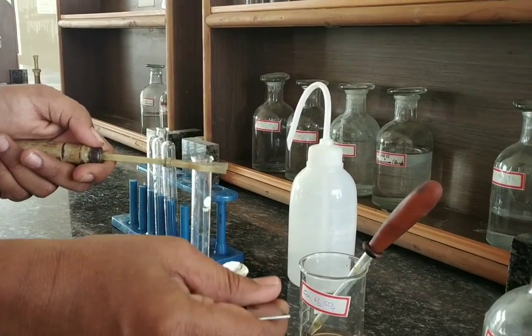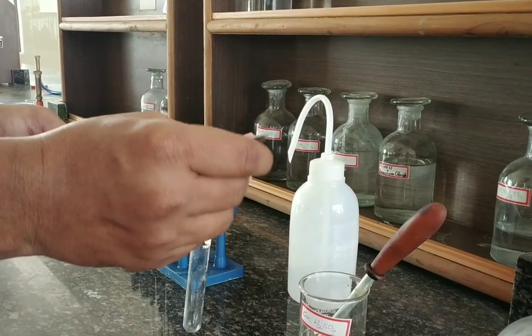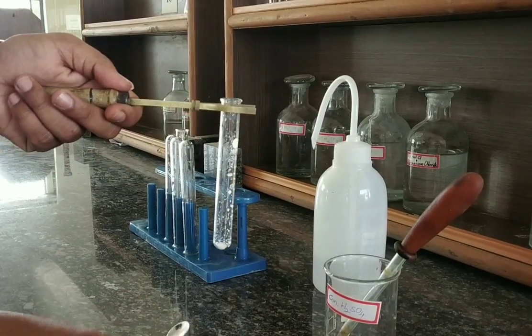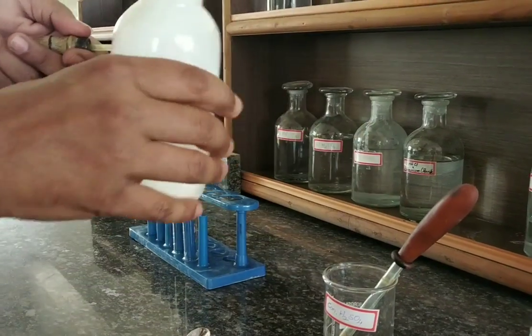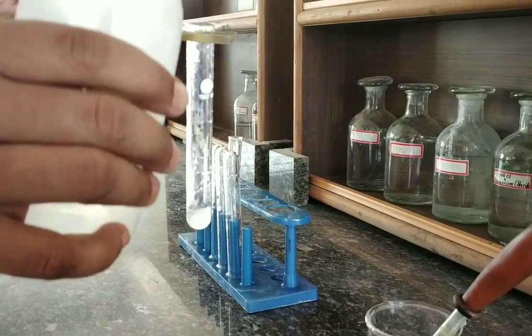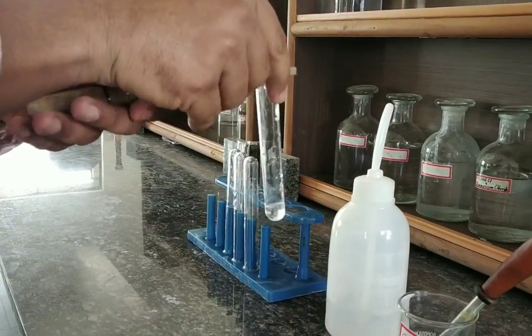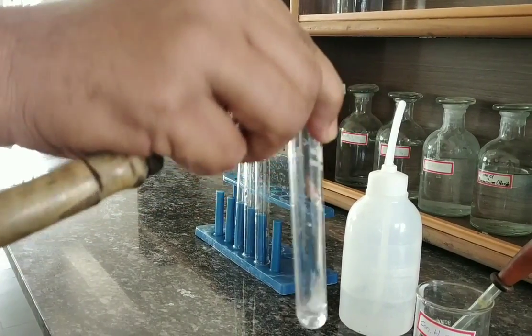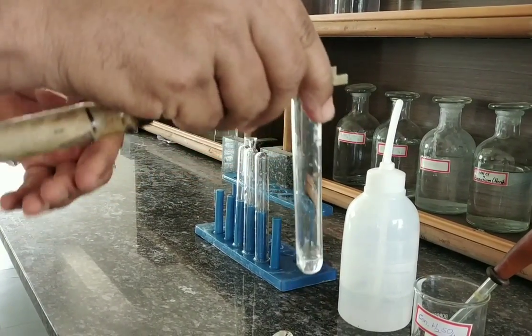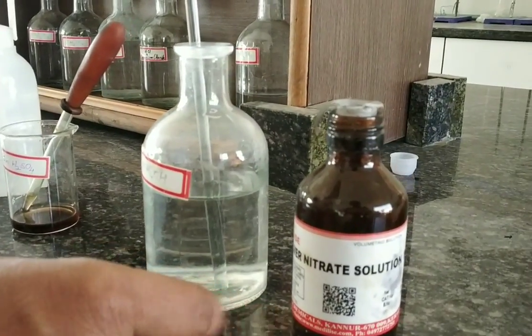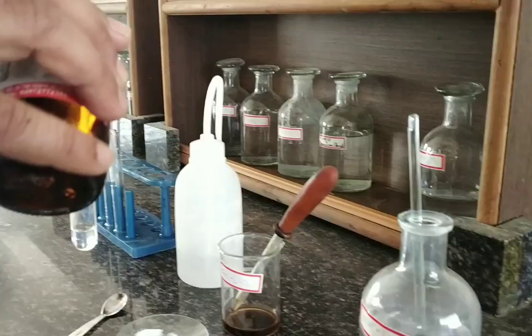Confirmative test for Cl minus chloride ion. Now take the salt into a test tube, add 1 ml of water and dissolve it. After dissolution, take silver nitrate solution.